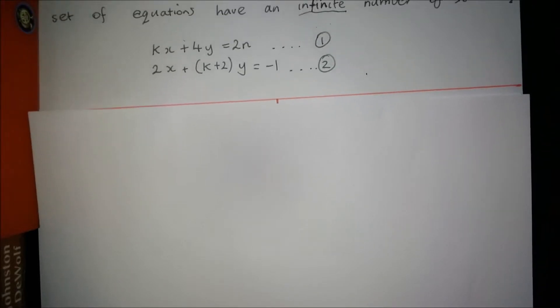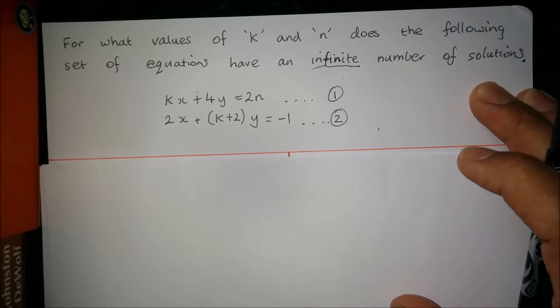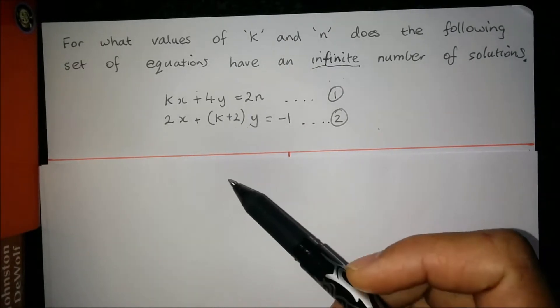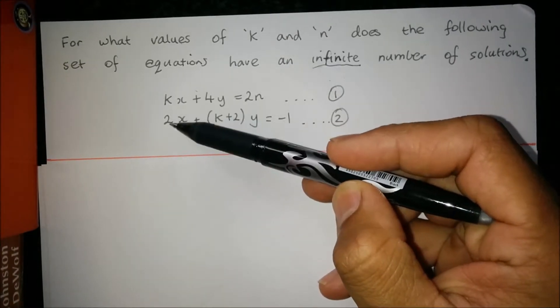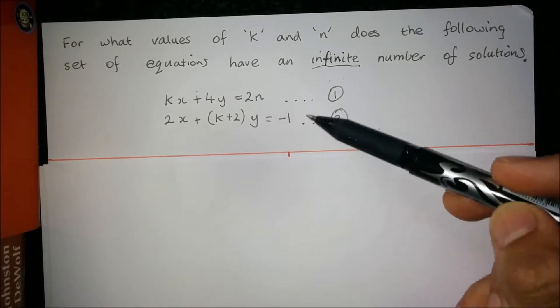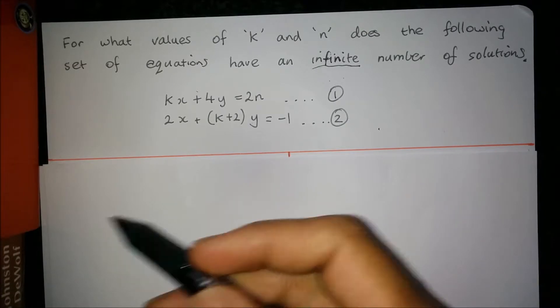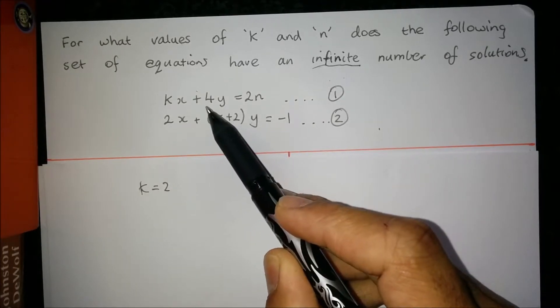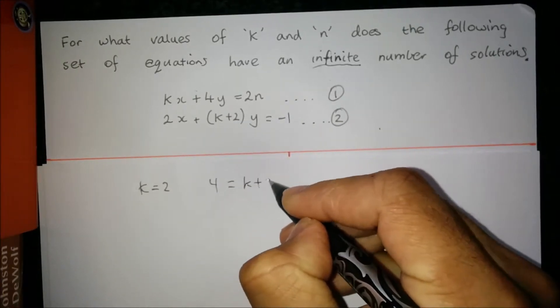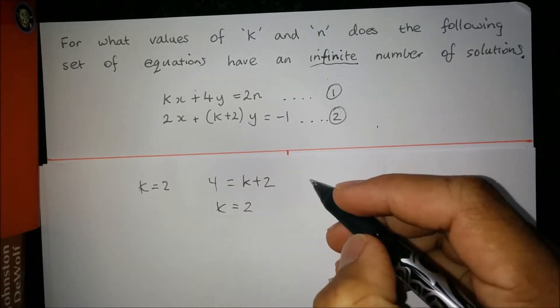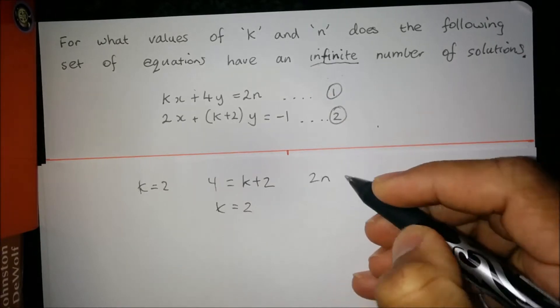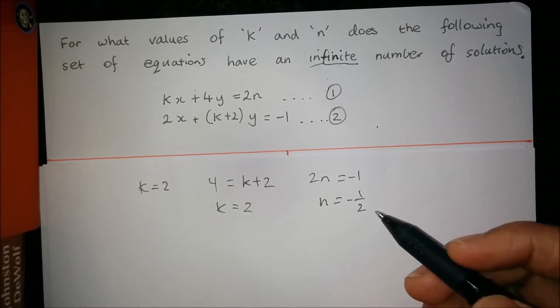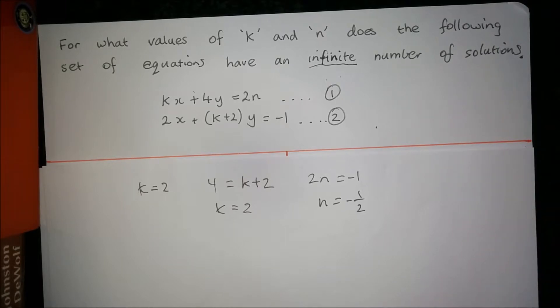Well, there is another way that a lot of you were tempted to solve this problem, and that was by inspection. So you could have seen that for both these equations to be the same, you would have to have the same coefficients of x, the same coefficients of y, and your right-hand side of the equation would have to be the same. I'll just do it that way to show you what you would have got. So you would have got k equals 2. From the coefficients of y, if you'd like them equal to each other, you'd say 4 equals k plus 2, which would just result in k equals 2. When you solve it, and from the right-hand side of the equation, you'd have 2n equals negative 1. Solve that, you get n equals negative 1 over 2. A lot of my students actually did this, but it turns out this is not the full story.